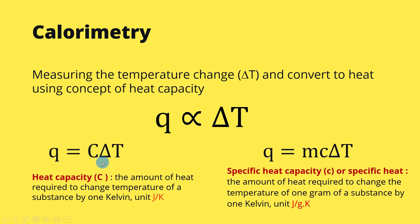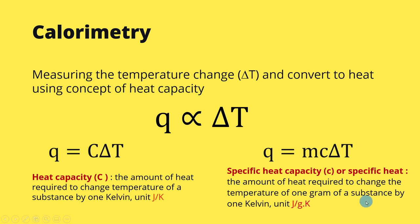We express this relationship mathematically using two equations. The first equation is Q = C·ΔT, where the heat capacity C is the amount of heat required to change the temperature of a substance by 1 Kelvin — we don't account for the mass separately here. The second equation is q = m·c·ΔT, where m is the mass of the substance and c (lowercase) is the specific heat capacity, or specific heat — the amount of heat required to change the temperature of 1 gram of substance by 1 Kelvin.